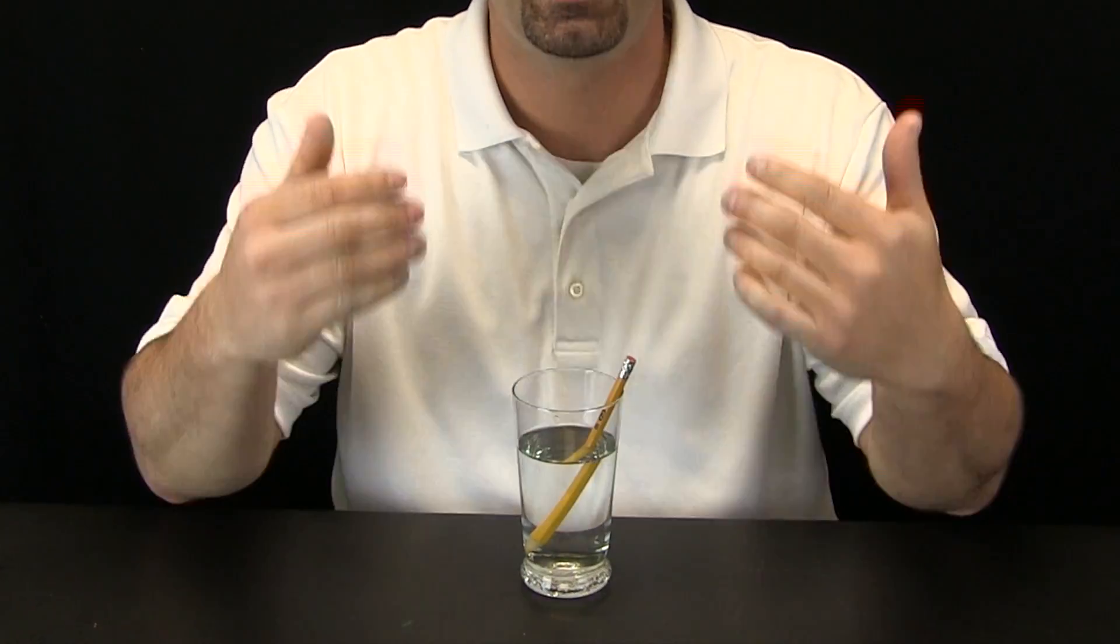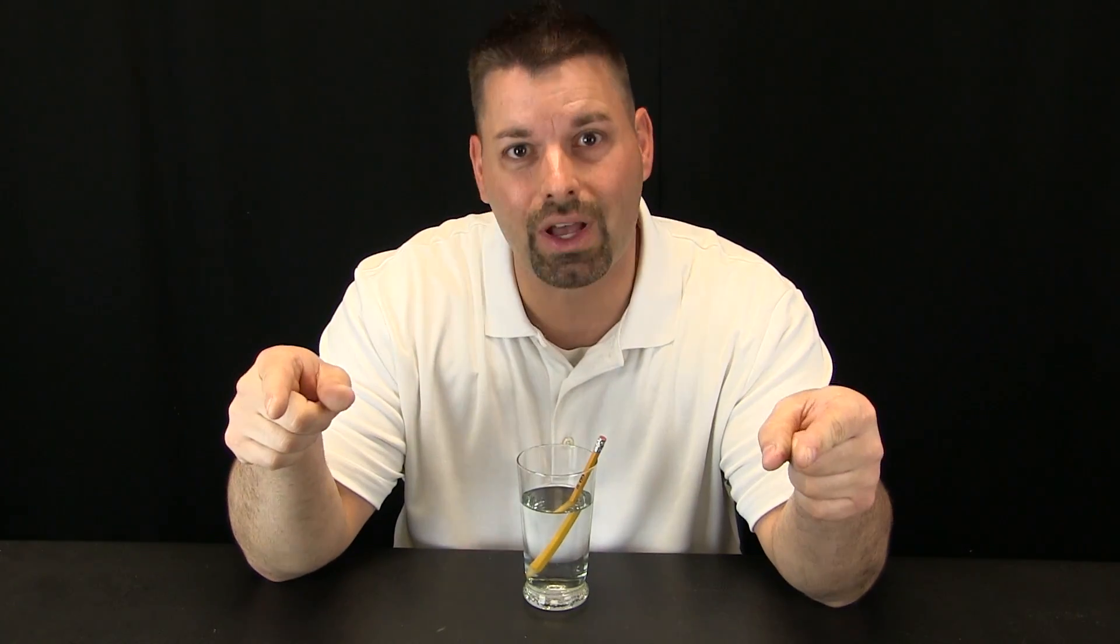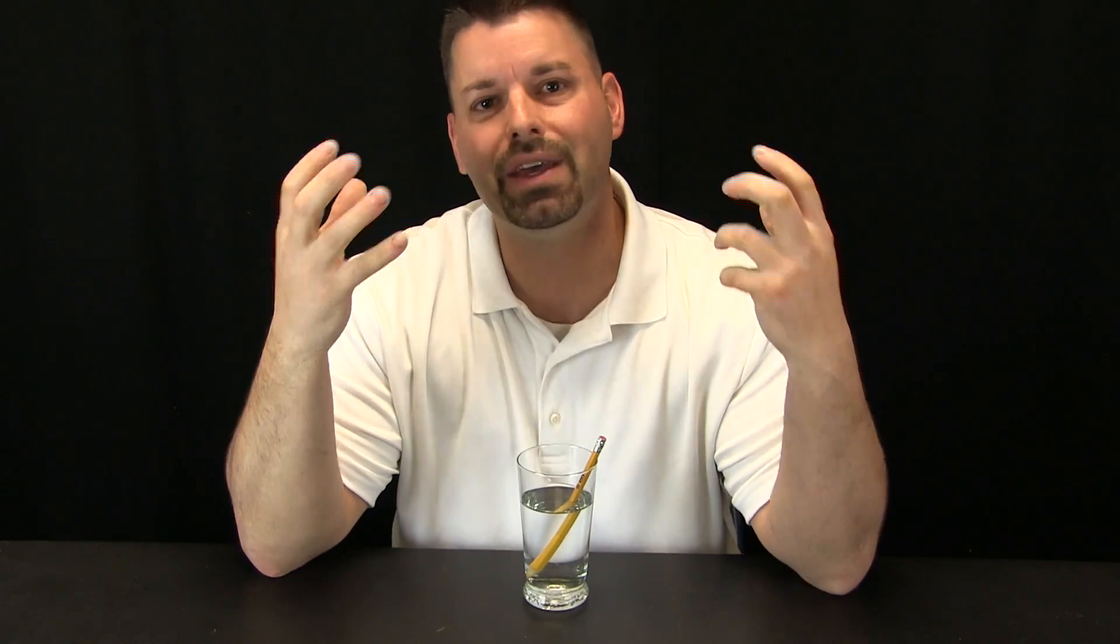Well, first we have to figure out how we see things. Through science we have discovered that we are able to see objects around us because light bounces off of those objects and goes into our eye. We see things because of light.